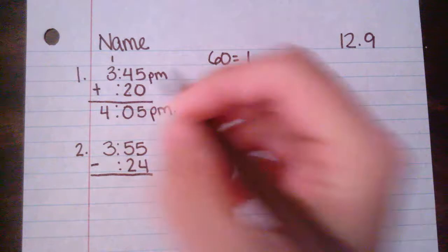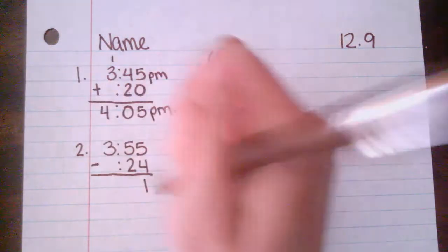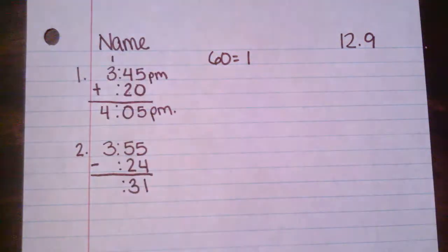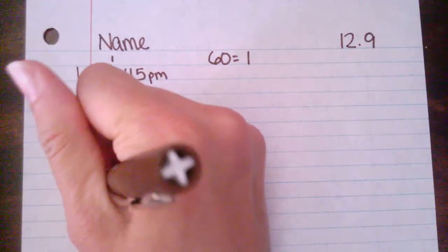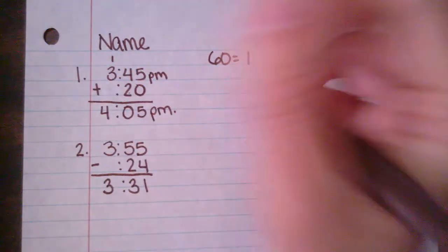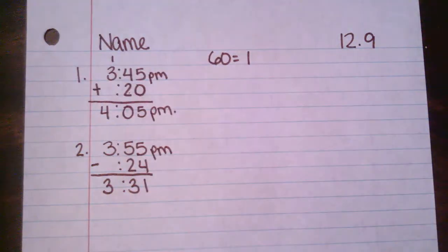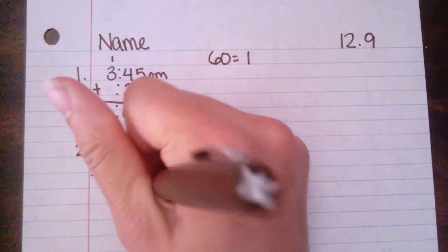So five minus four equals one. Five minus two equals three. And three minus nothing will give me three. Since it was 3:55 p.m., it's going to be 3:31 p.m. as well.